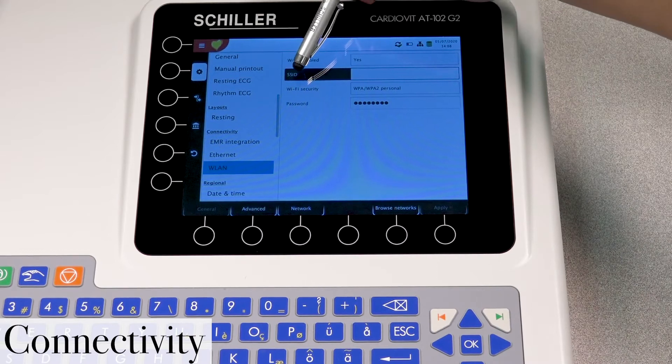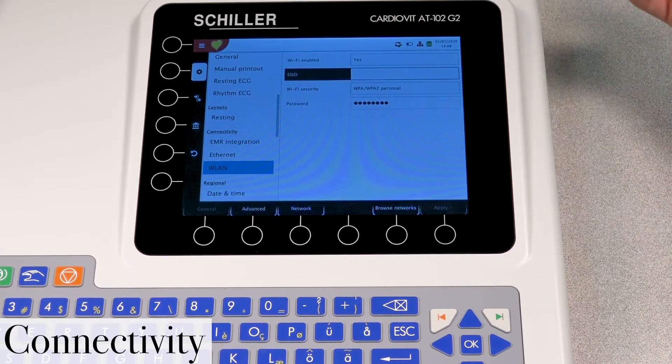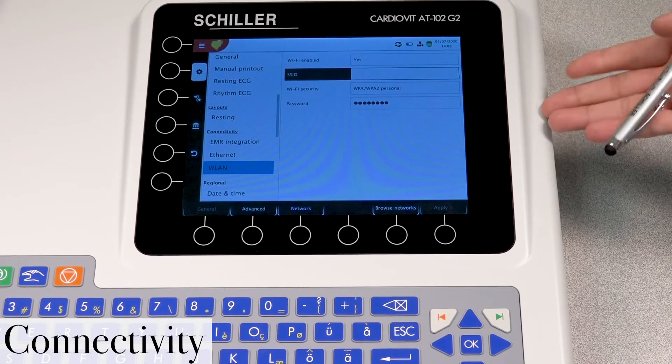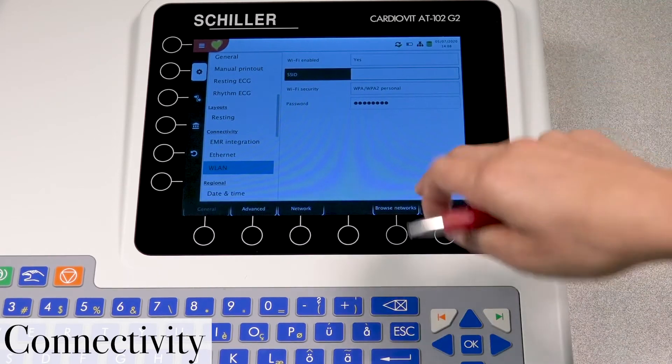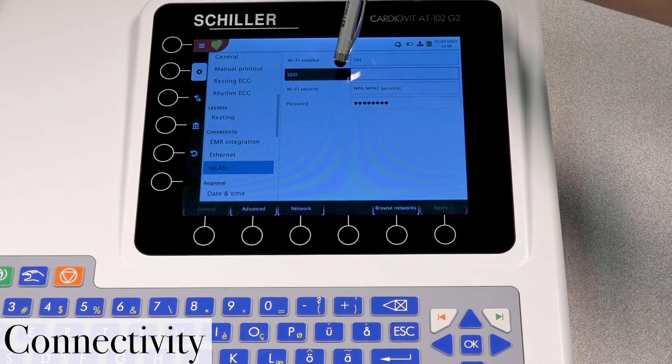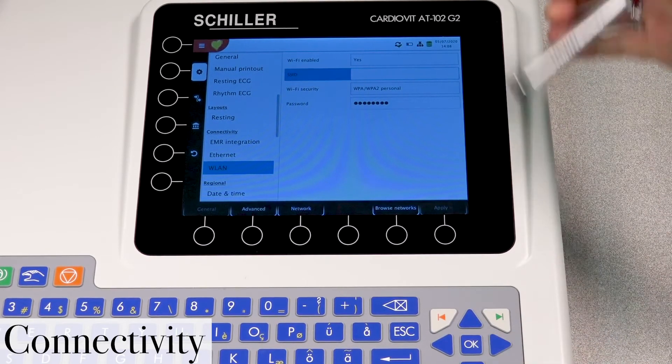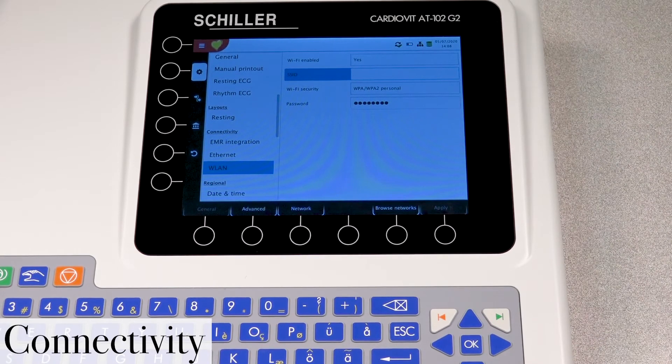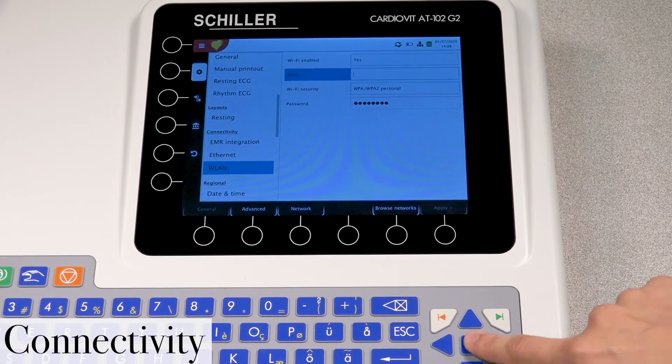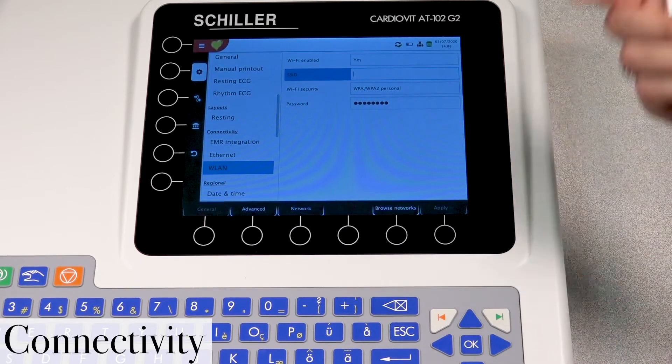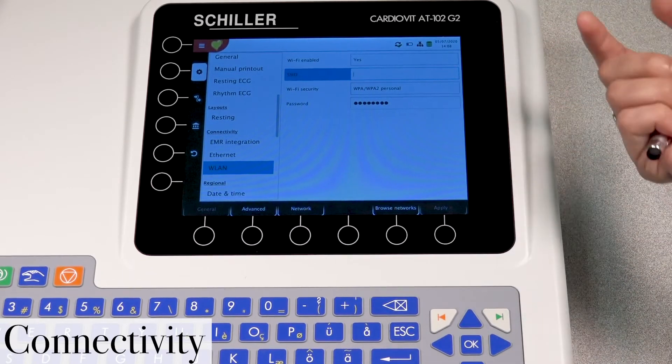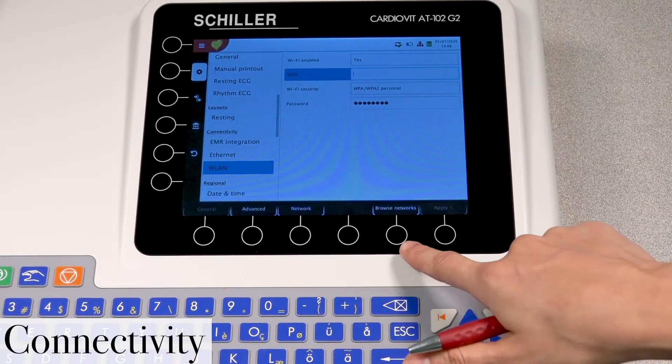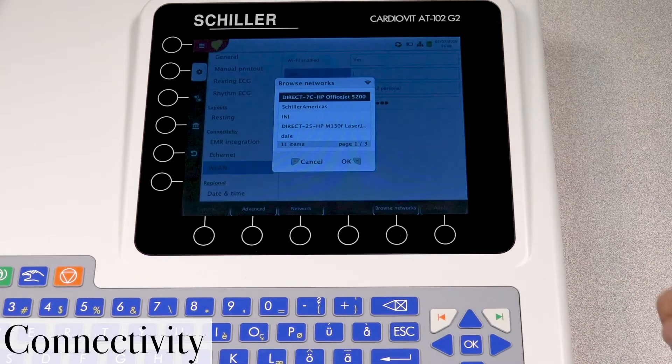Now the SSID here, this is where we will select the Wi-Fi network that we choose to connect to. So once again, you have it highlighted in black. Let's press OK to highlight it in blue. And now we can select the networks. Now in order to browse the networks, you have here toward the bottom, browse networks. We're going to go ahead and press that.